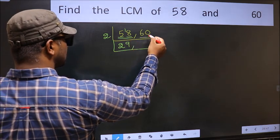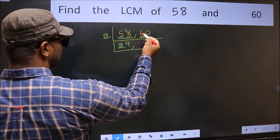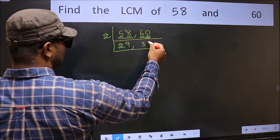The other number 60, last digit 0, so this is divisible by 2. First number 6. When do we get 6 in 2 table? 2 times 3 is 6. This 0 as it is down.